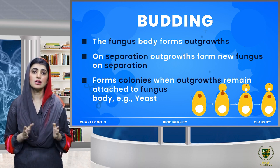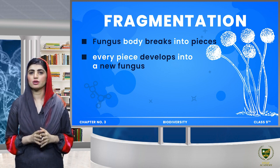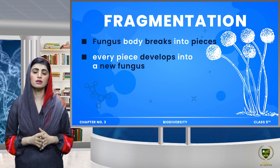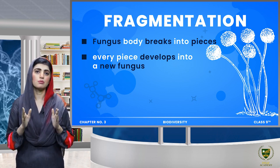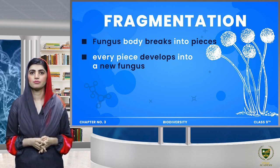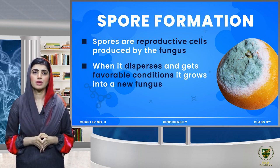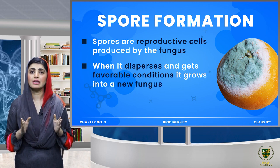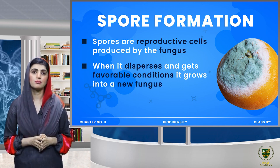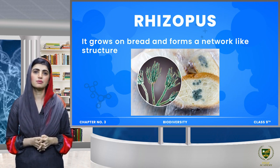We also see that fragmentation occurs in fungi — the fungus body breaks into different pieces or fragments, and each fragment is capable of developing into a new fungus. Similarly, spore formation also occurs in fungi. When these spores land on favorable conditions, they start the growth of fungus there.